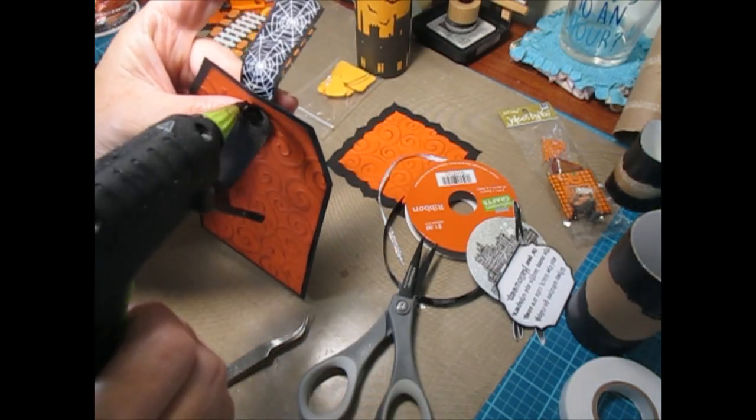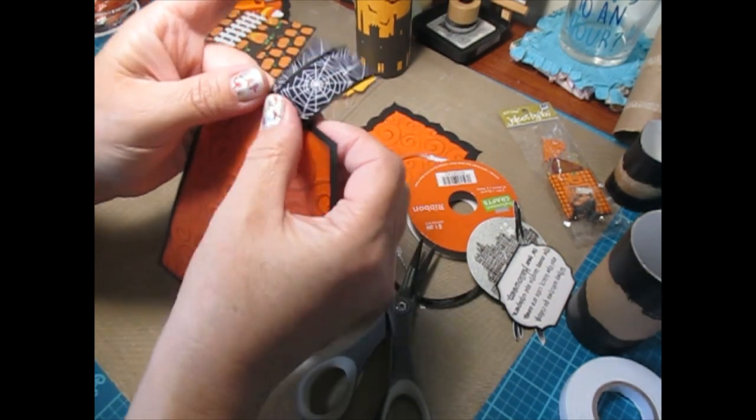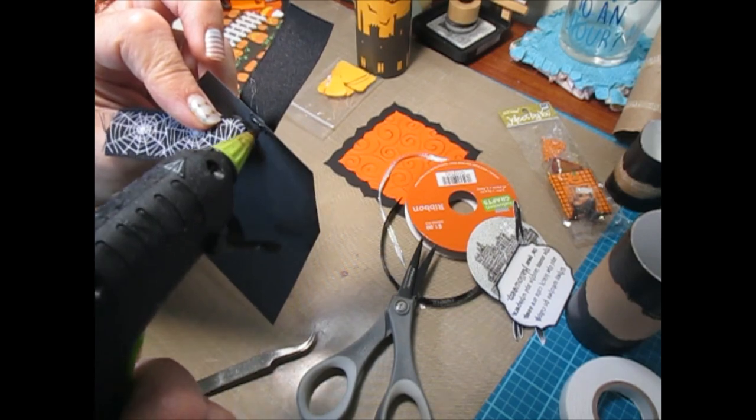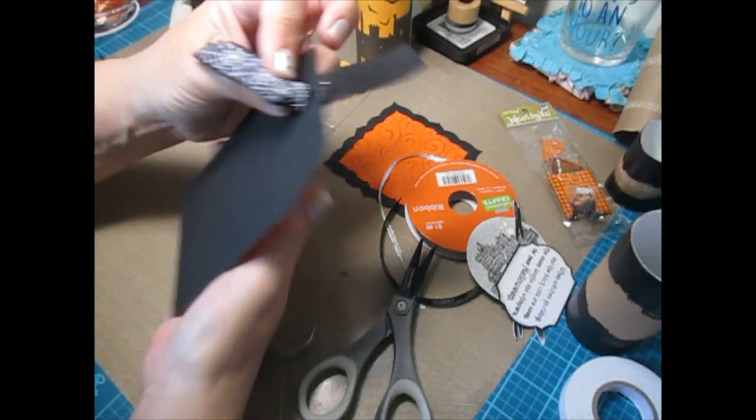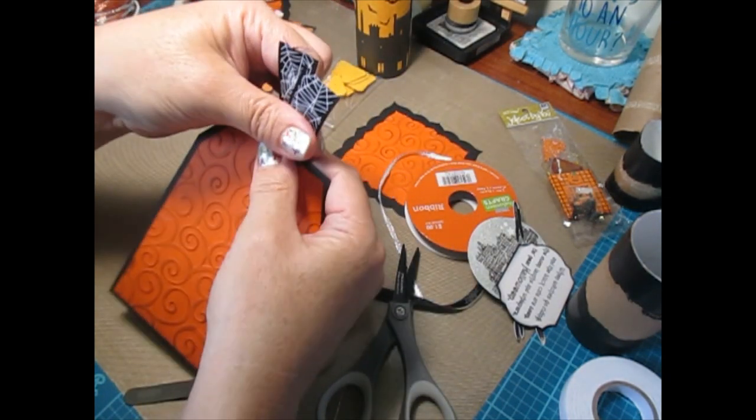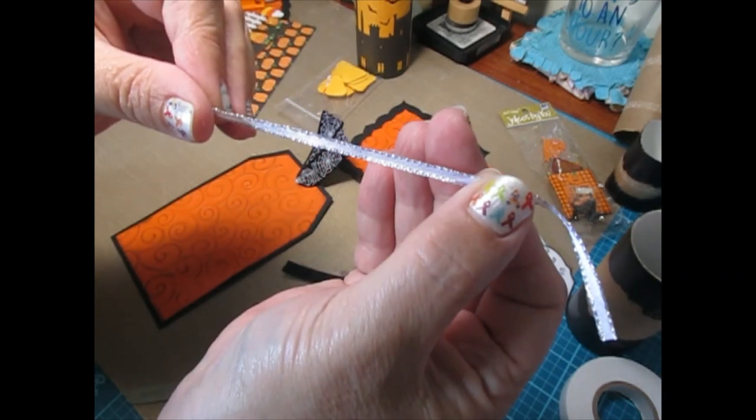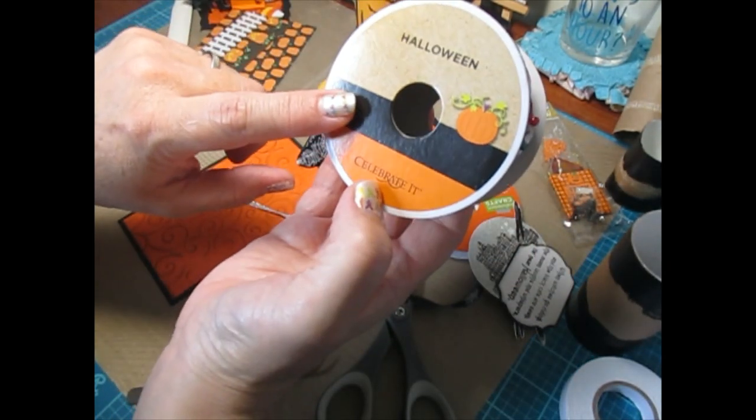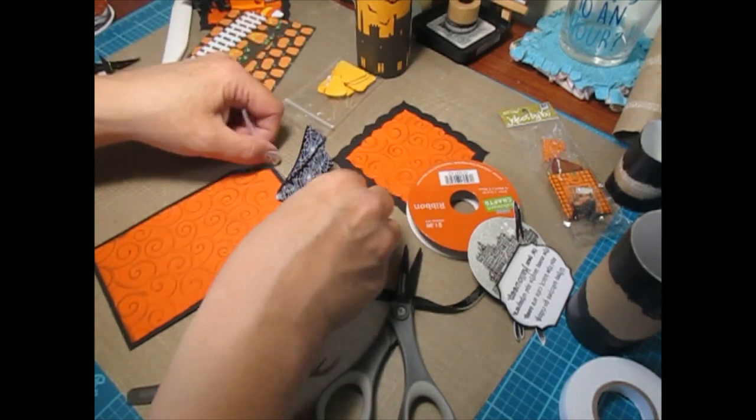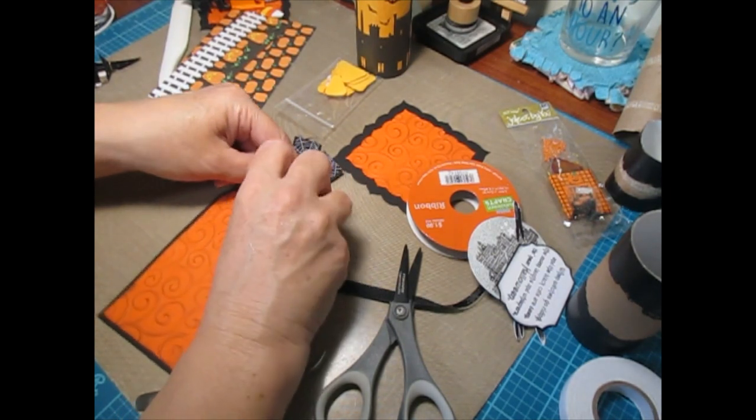So we have our base. I'm going to finish the tag. I'm just going to punch a hole in the top here. Then I have some of this spiderweb ribbon. I'm going to pull some through. As you can see, it's spiderweb on one side and plain on the other. Once I get it in, I'm going to flip it and then glue it so that you can see the spiderweb pattern on both sides.